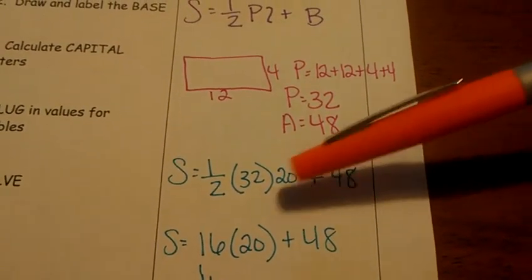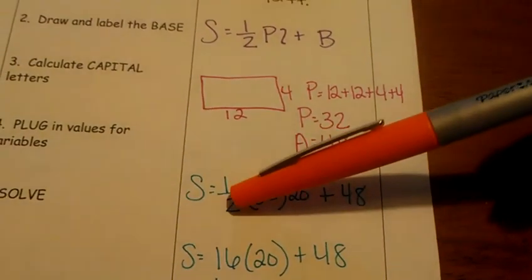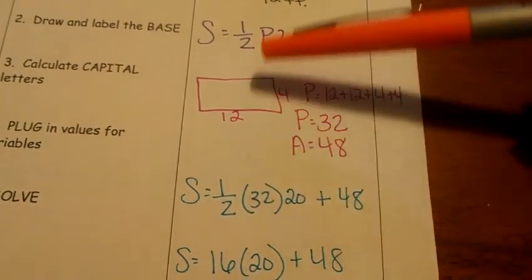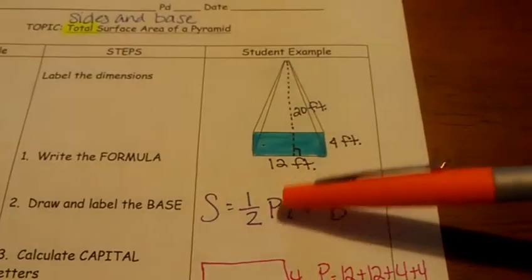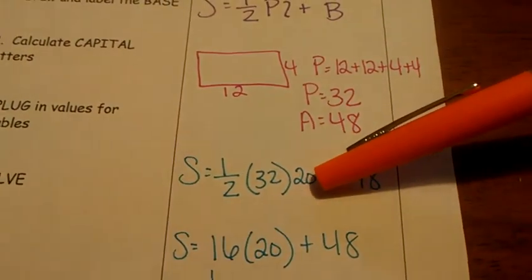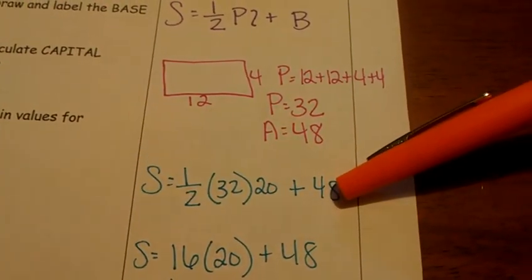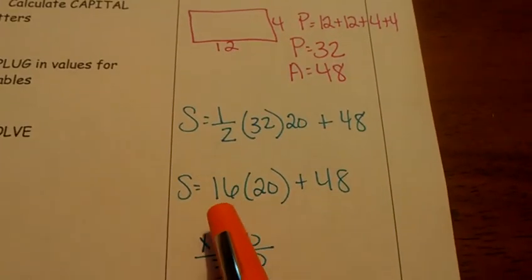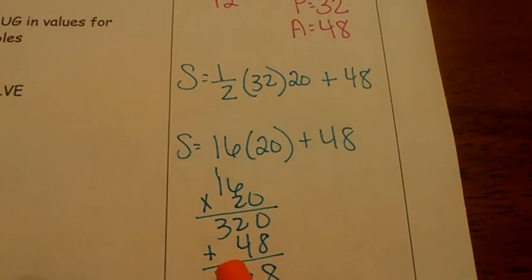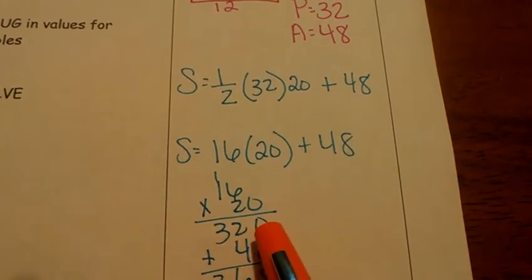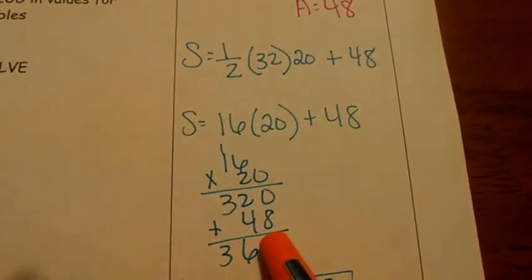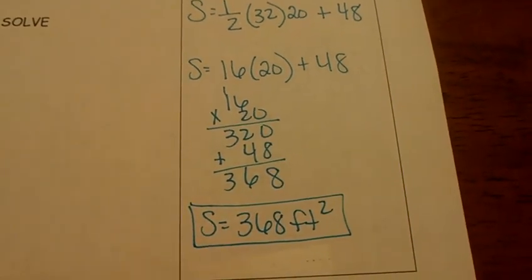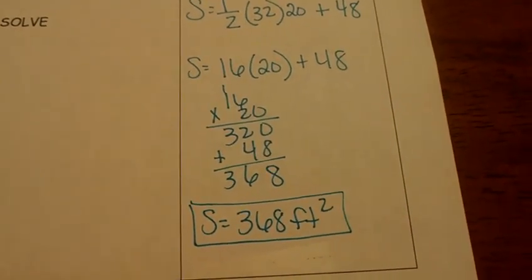Step number four, we're going to plug in all our numbers. Half stays a half. Perimeter of the base is 32. My slanted height, come up here, it is 20. My slanted height is 20, plus capital B, area of the base, which is 48. Now I've got to solve it. 16 times 20. 16 times 20 is 320, plus 48, plus 48 is 368. So your surface area is 368 feet squared.